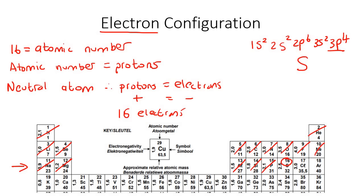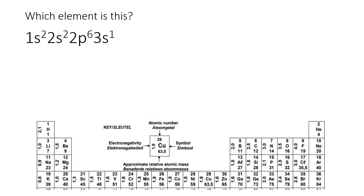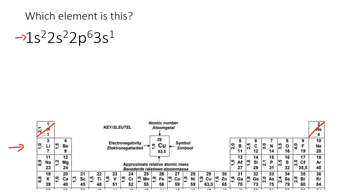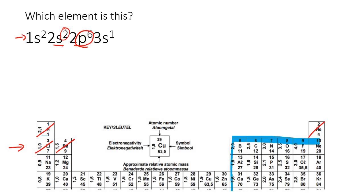All right, so here's an example — you have to figure out which element this is. We start at the very beginning. They tell us we should start in row 1, and in the S block — remember in row 1 both of those are included as the S block — they said we can cross off two blocks. Then in row 2 in the S block, they said we can cross off two electrons. Then in the P block — your P block is this one over here — they said we can cross off six electrons.